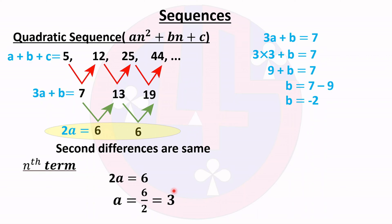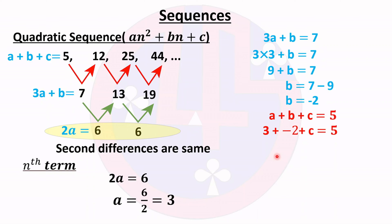Now we know the values of a and b. Next, we find c using the equation a + b + c = 5. Substituting a = 3 and b = −2: 3 − 2 + c = 5, so 1 + c = 5, giving c = 4.